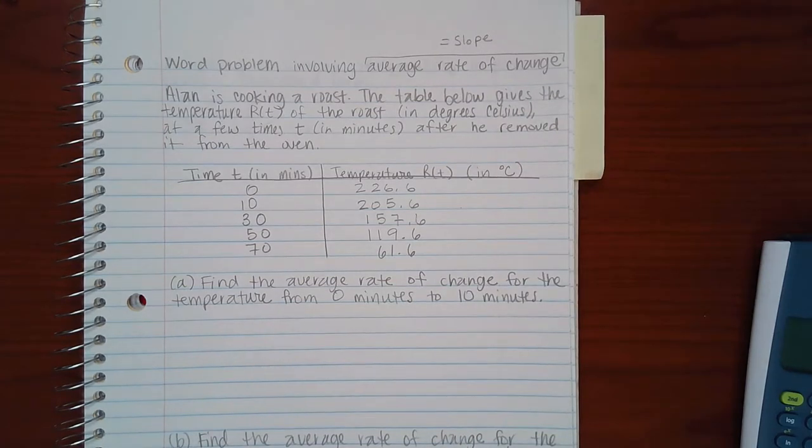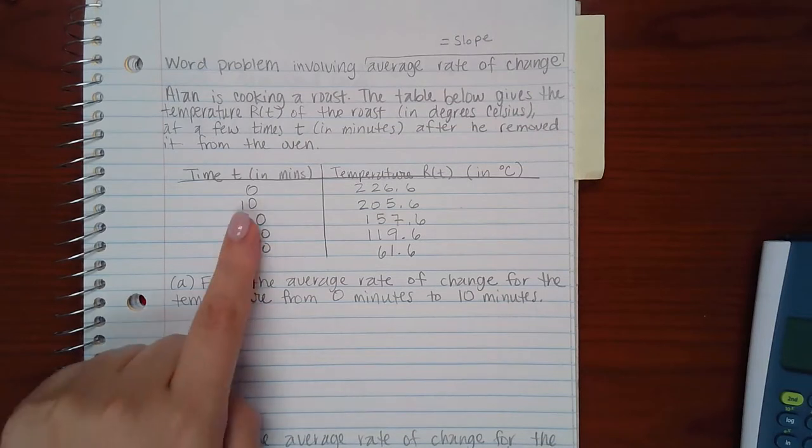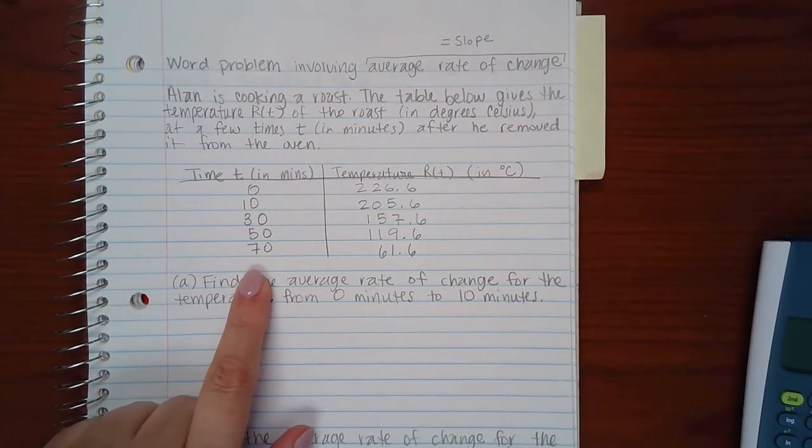Let's go ahead and read through this word problem. Alan is cooking a roast. The table below gives the temperature r of t, the temperature of the roast in degrees Celsius, at a few times t in minutes after he removed it from the oven. So we've got this chart here, and it has, for all of these times, the temperatures in degrees Celsius.